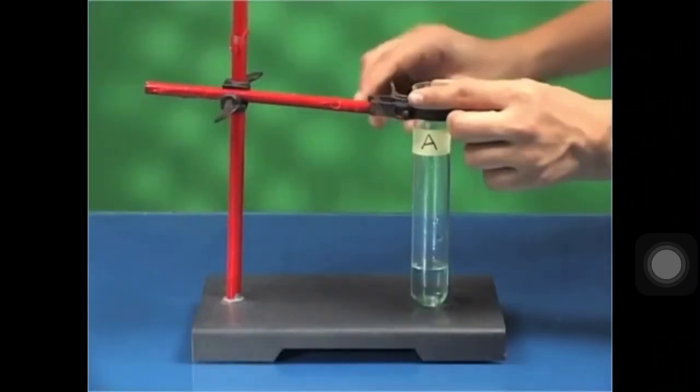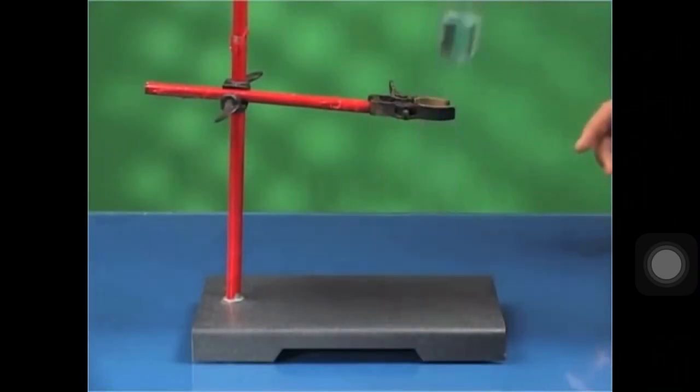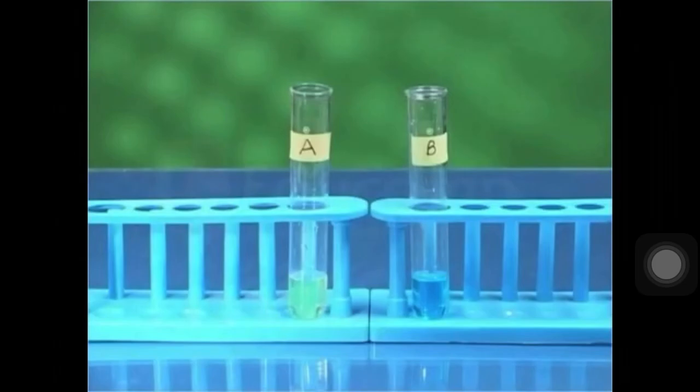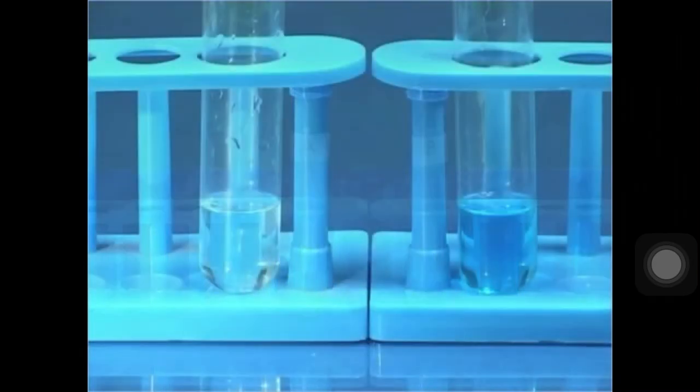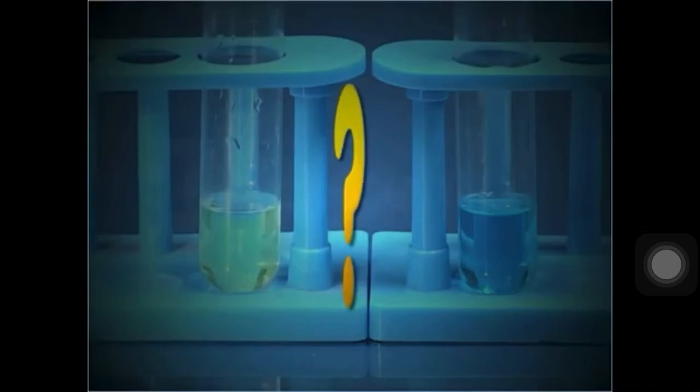Now, take out test tube A from the clamp stand and keep it beside test tube B for comparison. On comparing both the solutions, you will find that the original deep blue color of the copper sulfate solution has faded away.